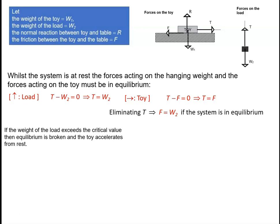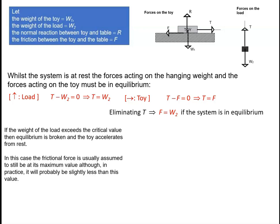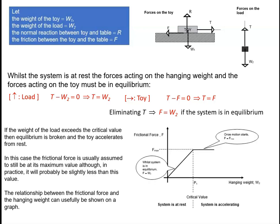If the weight of the load exceeds the critical value, then equilibrium is broken and the toy will accelerate from rest. In this case, the frictional force is usually assumed to still be at its maximum value, although in practice it will probably be just slightly less. The relationship between the frictional force and the hanging weight can be shown on a graph: for the first part, F equals W2, giving a straight line at 45 degrees. Once motion starts, F stays at its maximum value and the system accelerates.